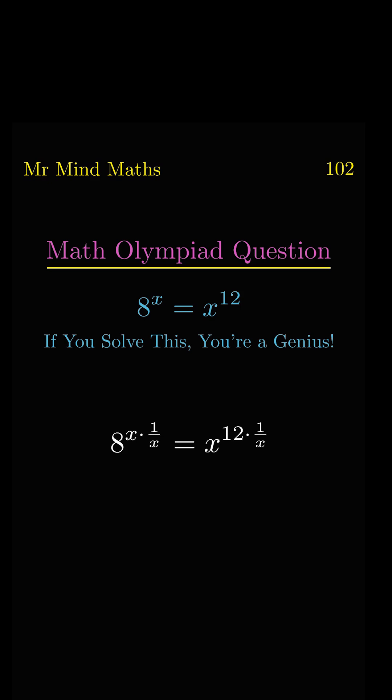The left-hand side x and 1 over x will get cancelled. So we will get... Now we will be taking 1 over 12 power on both sides. On the right-hand side, 12 and 1 over 12 in the power will get cancelled.